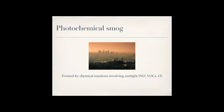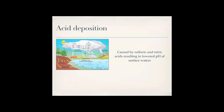Photochemical smog is formed by chemical reactions involving sunlight, such as those with nitrous oxides, VOCs, and oxygen. Acid deposition is caused by sulfuric and nitric acid, resulting in a lowered pH of surface waters.